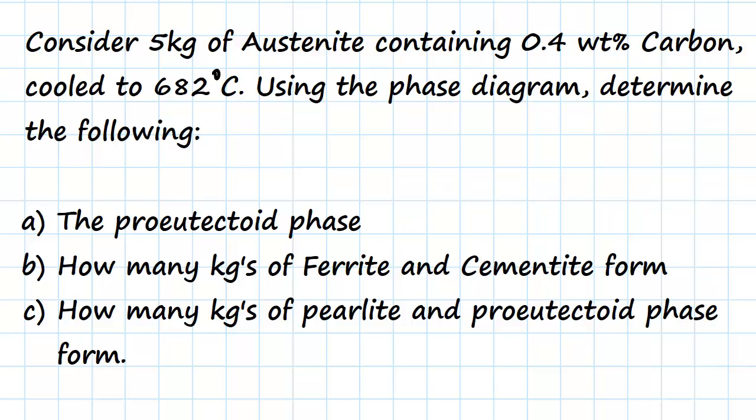Hi everyone, welcome to the video. We're going to have a look at a question using the phase diagram. In this question, consider five kilograms of austenite containing 0.4 weight percent of carbon cooled to 682 degrees Celsius.